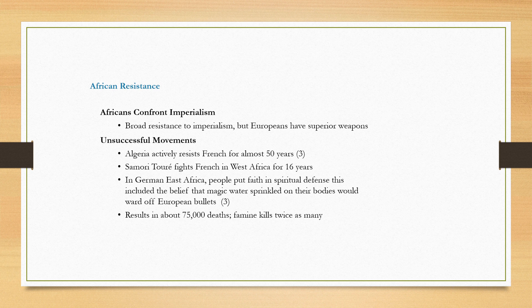Imperialism — a stronger country maintaining control over a weaker one — was often met with resistance. Europeans tended to have superior weapons and technology and were able to impose their will, but there were many cases where people tried to resist European rule. For example, Algeria fought against French imperialism for 50 years. The French in West Africa were fought against for 16 years. In case after case, colonial peoples rose up against their imperial powers — some were successful, some were not, but it often led to great violence.